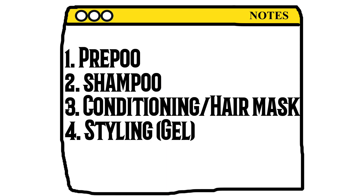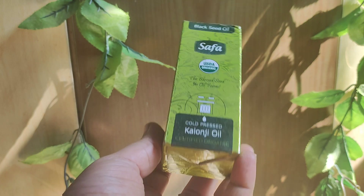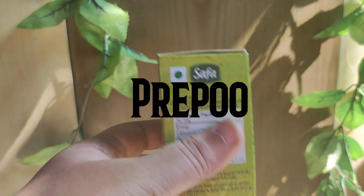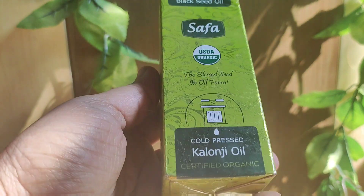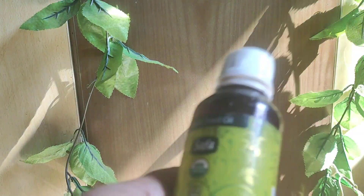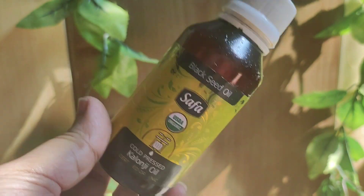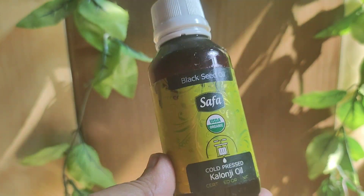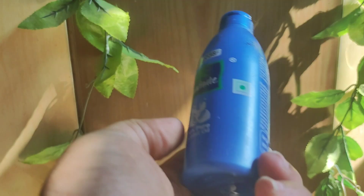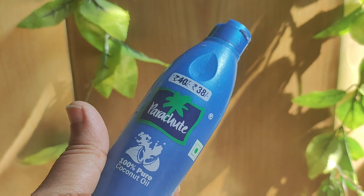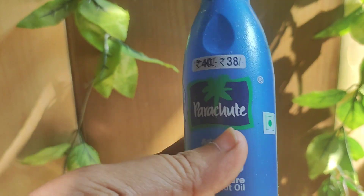The first step is prepoo. In prepoo, we oil our hair for 15-20 minutes and then shampoo after that. I use black seed oil — it's a cold pressed oil, a little heavy, but my hair falls so I used it. I've made a lot of reviews on my channel. You can also use any hair oil that suits your hair, like parachute hair oil, though it contains silicones and sulfates.